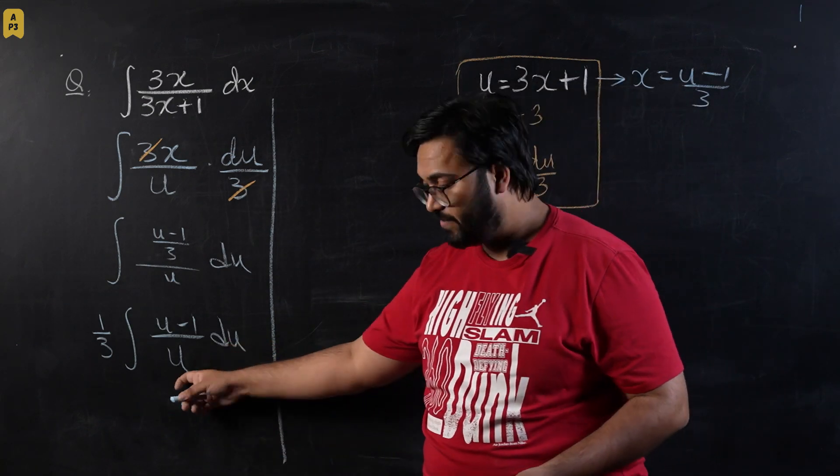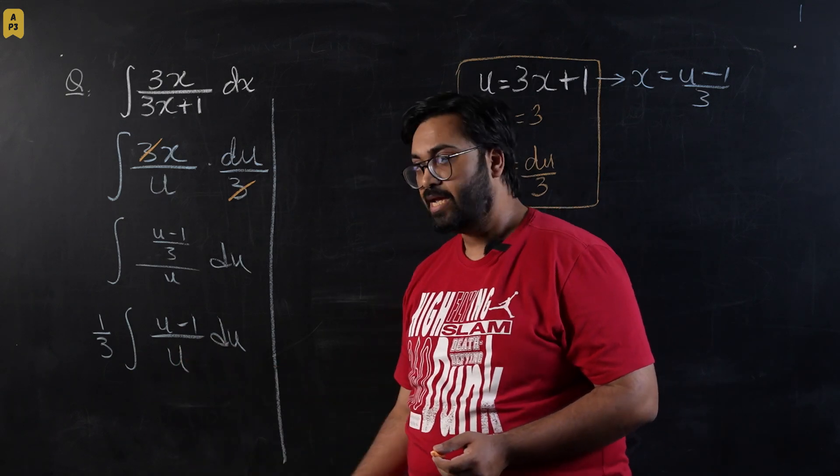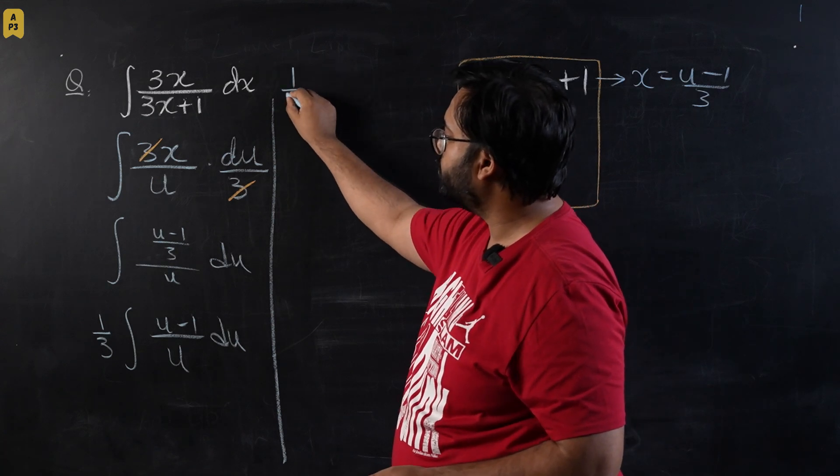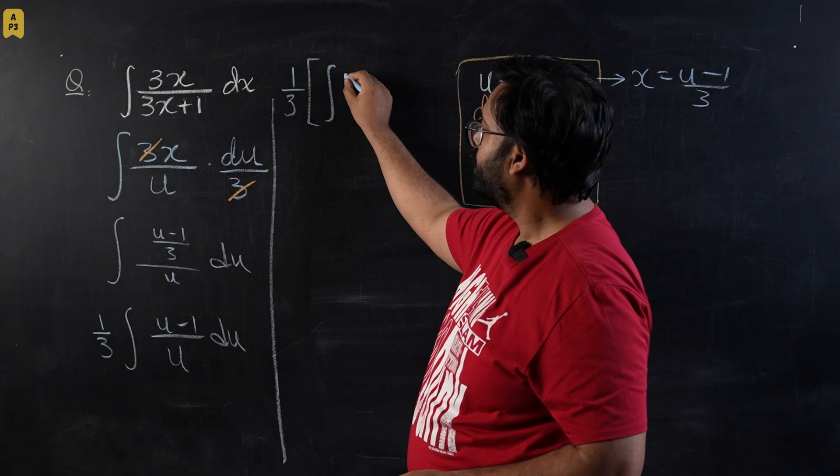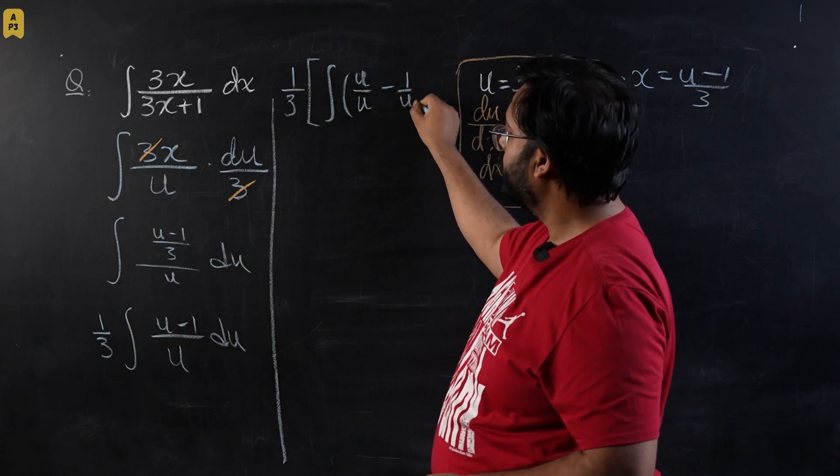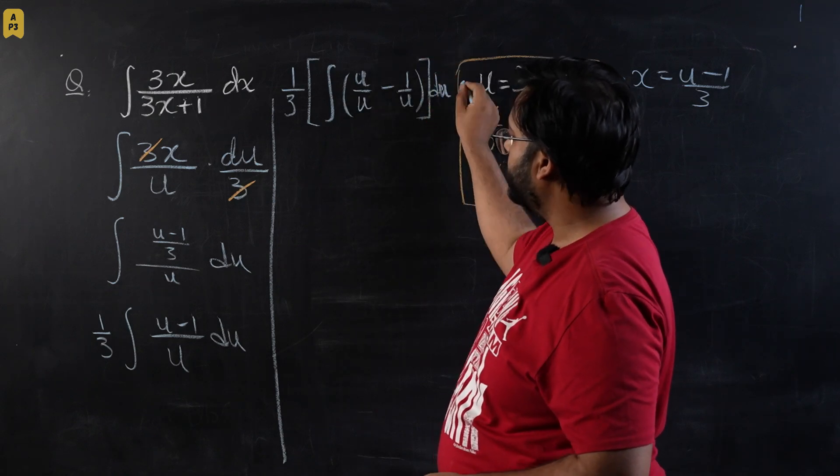In this question, it's a very simple integration and all you have to do is you have to split this fraction. So what I'm going to do is I'm going to say this is 1 over 3, and we're going to integrate u over u minus 1 over u. What I've done is I have split the fraction into two parts, so it's u over u and minus 1 over u.